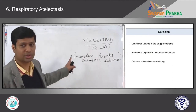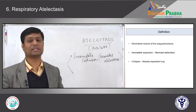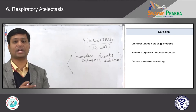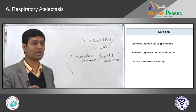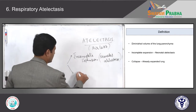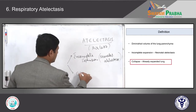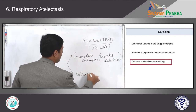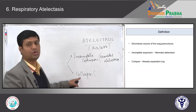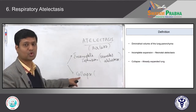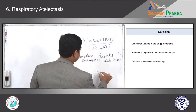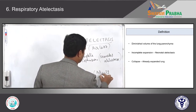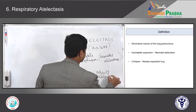Compared to this, if an airless lobe or airless lung occurs in an adult individual where the lung is already expanded, we call it collapse. Because this occurs most commonly in adult individuals, we call it adult atelectasis.